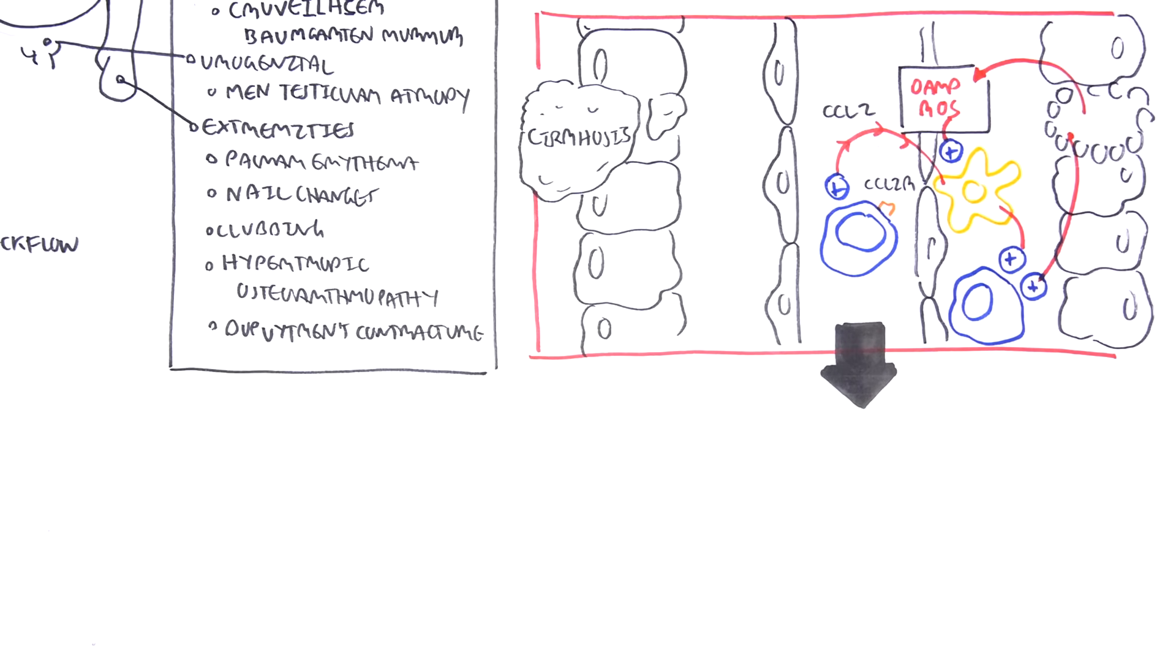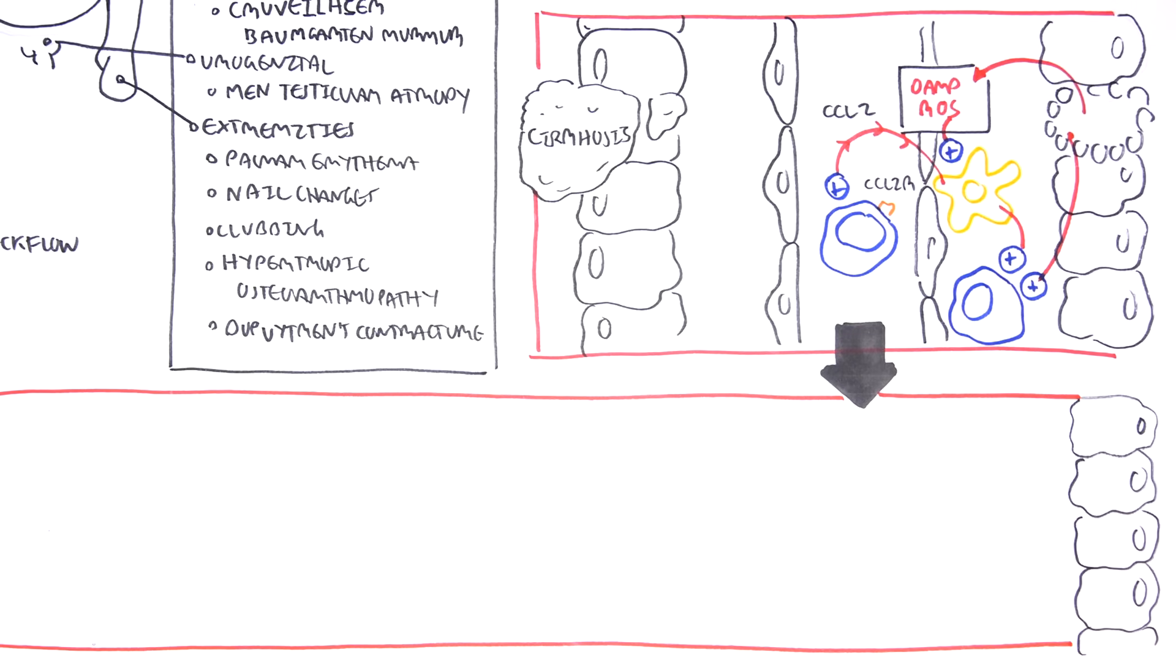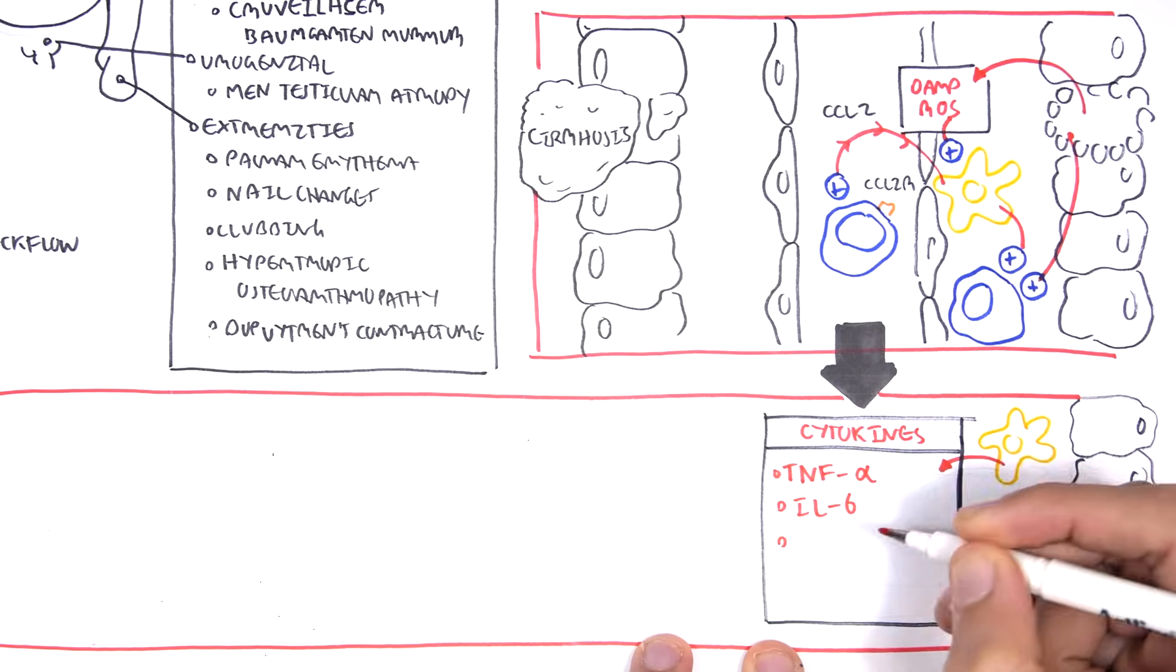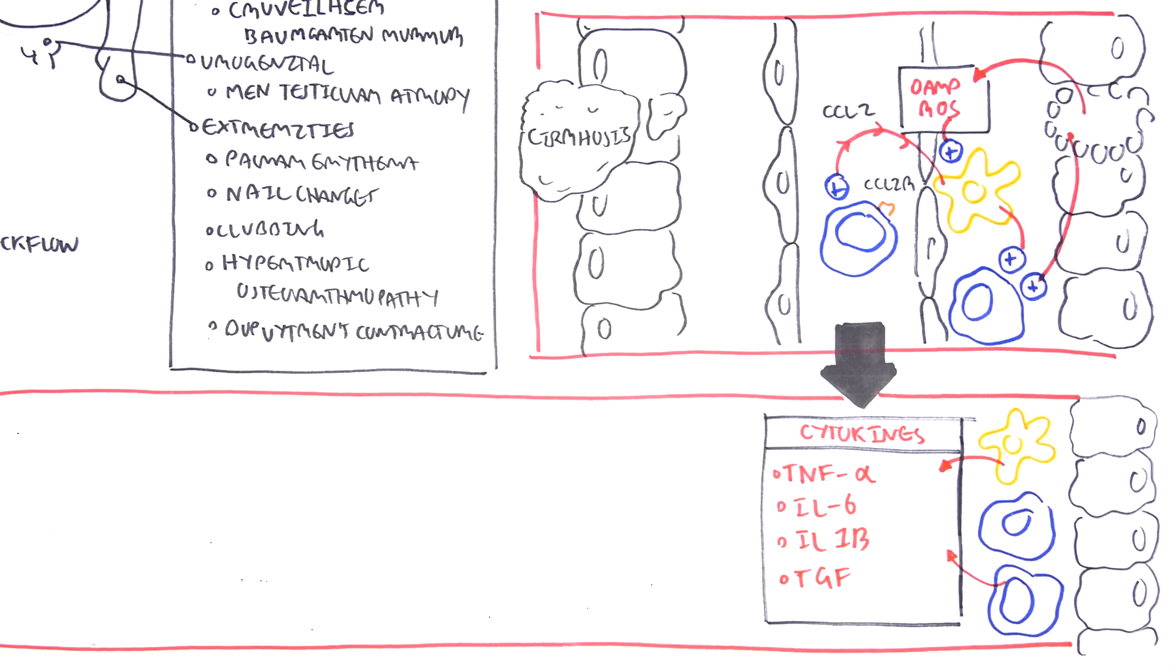As a result, we see an accumulation of immune cells, activation of stellate cells, which release many more cytokines, mainly TNF-alpha, interleukin-6, interleukin-1β, and TGF.